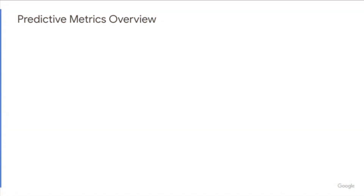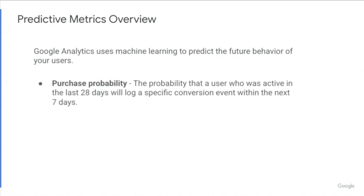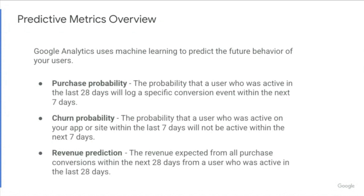Thank you, Krista. I'm really excited to be here today. Google Analytics automatically enriches your data by bringing Google machine learning expertise to bear on your dataset to predict the future behavior of your users. With predictive metrics, you can learn more about your customers just by collecting structured event data. There are currently three predictive metrics available: purchase probability, churn probability, and a revenue prediction metric.